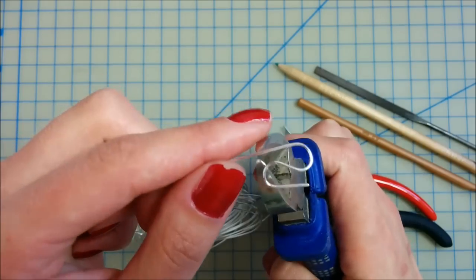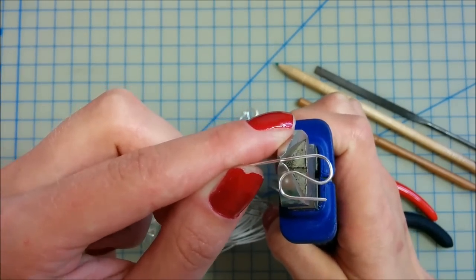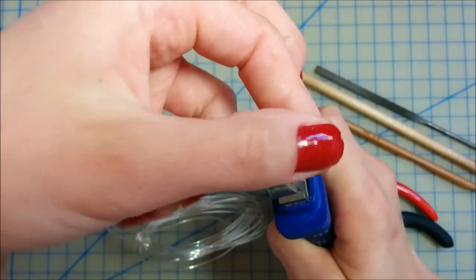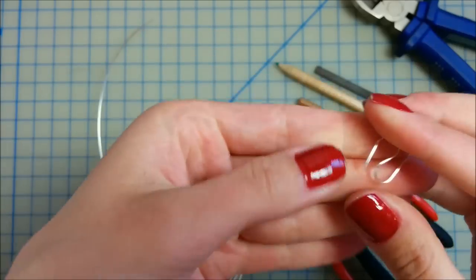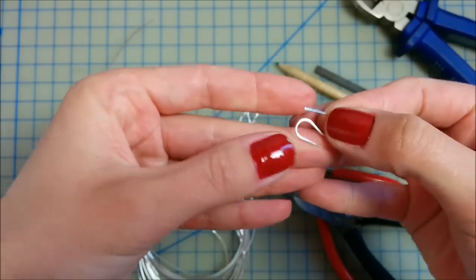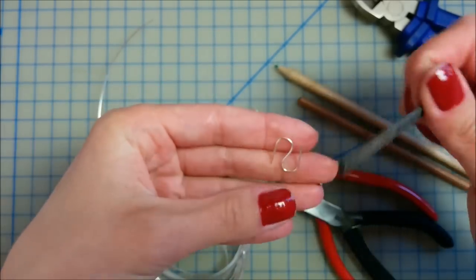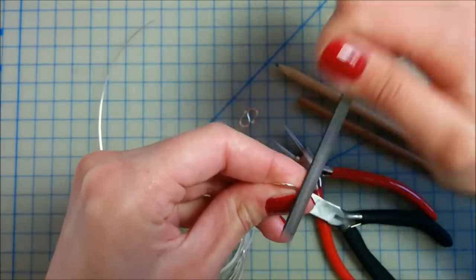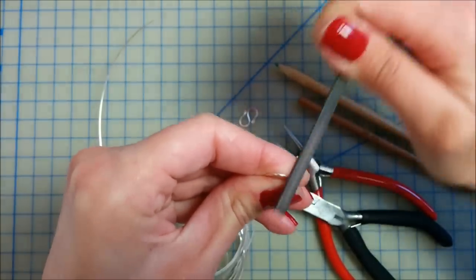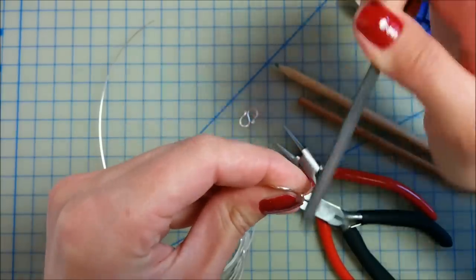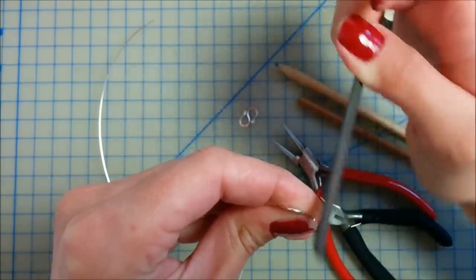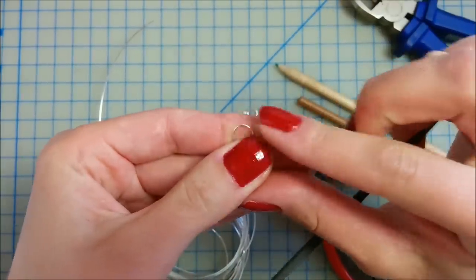Now cut the wire. You have this form. Now file the ends. Make it smooth.